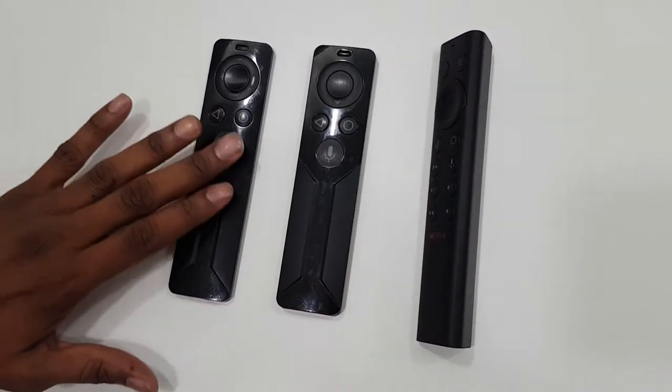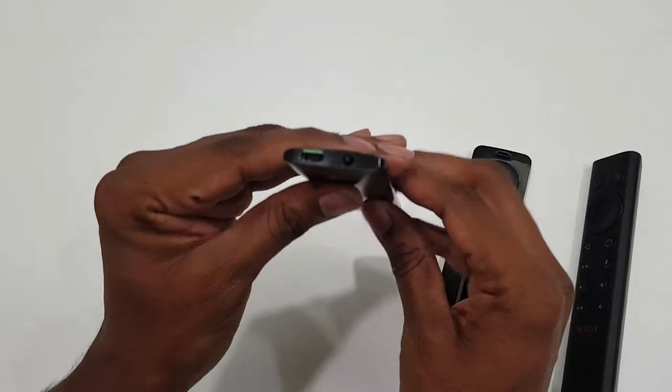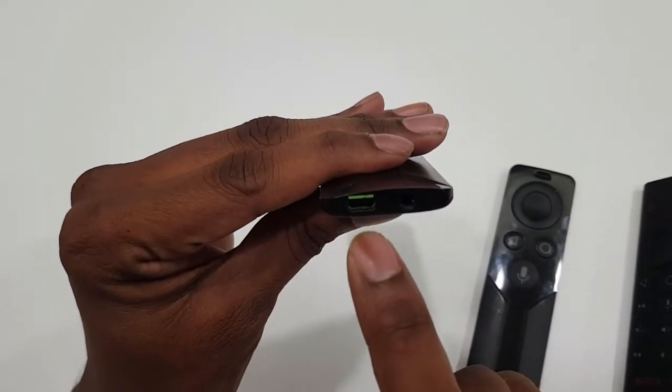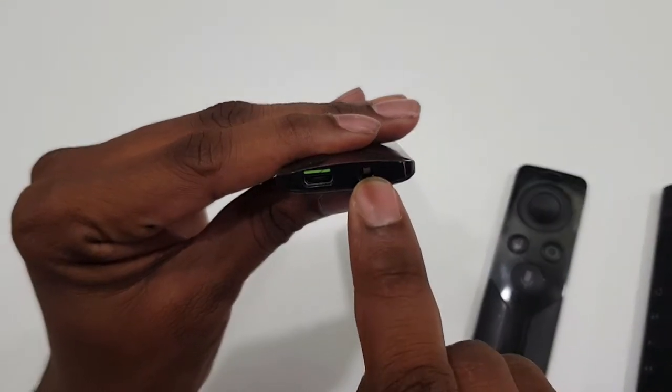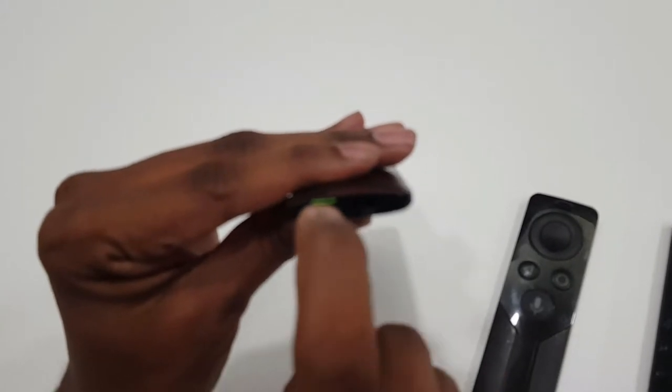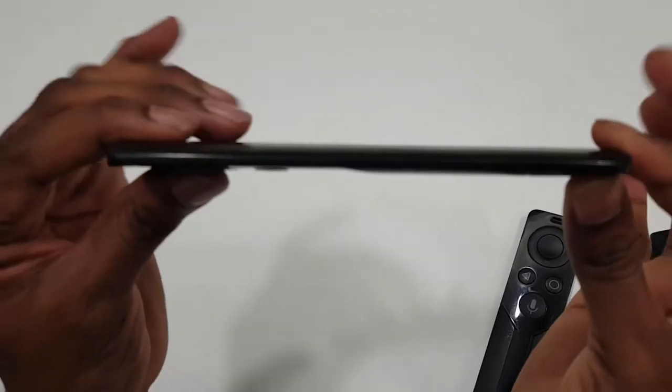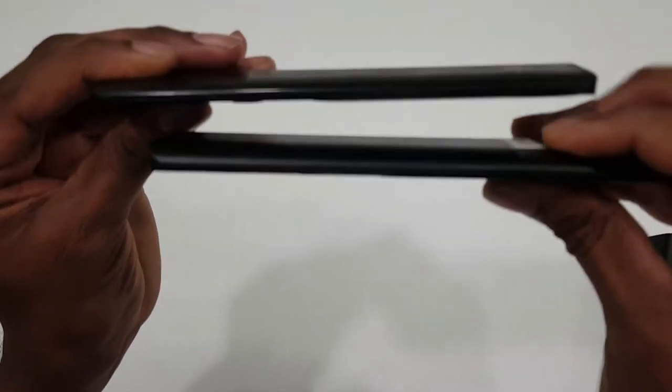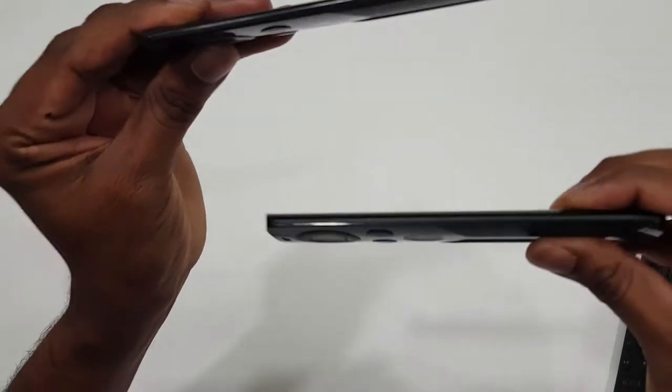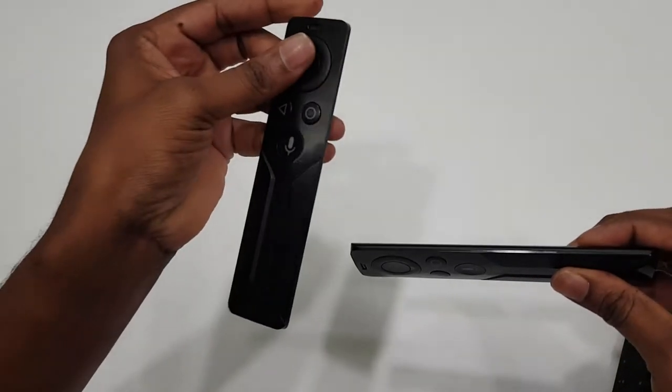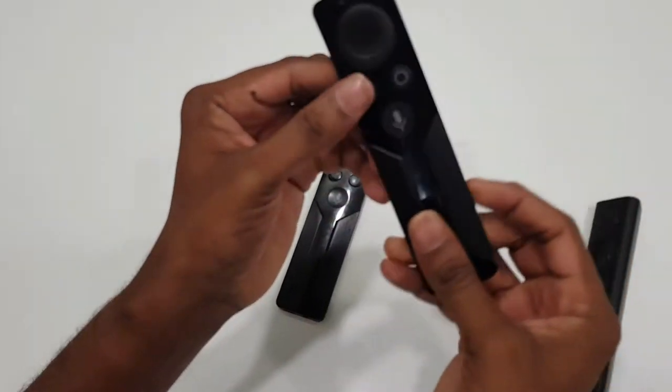The main differences are the 2015, if you can see this, has got the 3.5mm jack as well as the USB charging port to charge this. This is also very sleek if you see this and compare it. This is a little bulkier and this is a little sleek here.